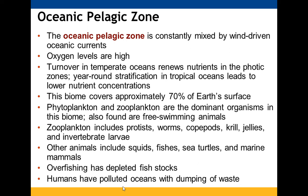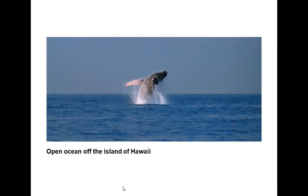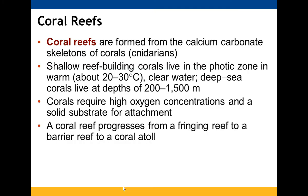The oceanic pelagic zone is constantly mixed by wind-driven ocean currents and has high oxygen levels. Turnover in temperate oceans renews nutrients in the photic zone; year-round stratification in tropical oceans leads to lower nutrient concentrations. It covers approximately 70% of Earth's surface. Dominant organisms are phytoplankton and zooplankton. Free-swimming animals include worms, copepods, krill, jellies, vertebrate larvae, squids, fishes, sea turtles, and marine mammals. Overfishing has reduced fish populations, and humans have polluted this zone by dumping waste.